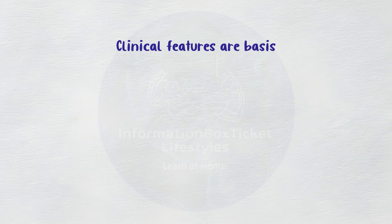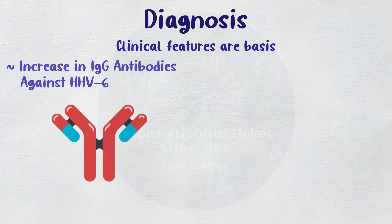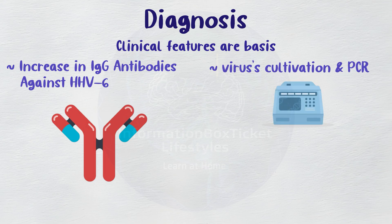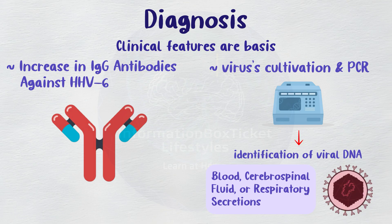Diagnosis of roseola is typically based on clinical features. An increase in IgG antibodies against HHV-6, as well as viral culture and PCR identification of viral DNA from clinical samples such as blood, cerebrospinal fluid, or respiratory secretions, can all be used to confirm the presence of HHV-6.